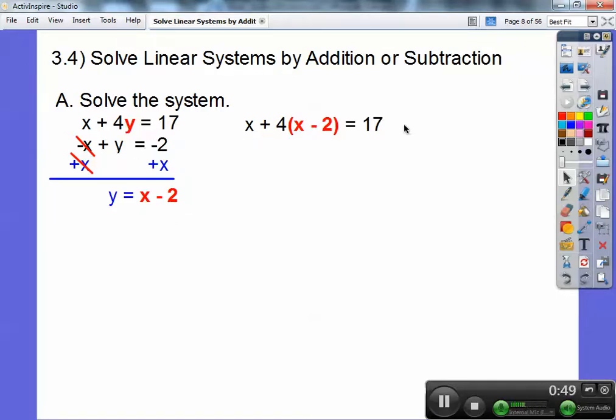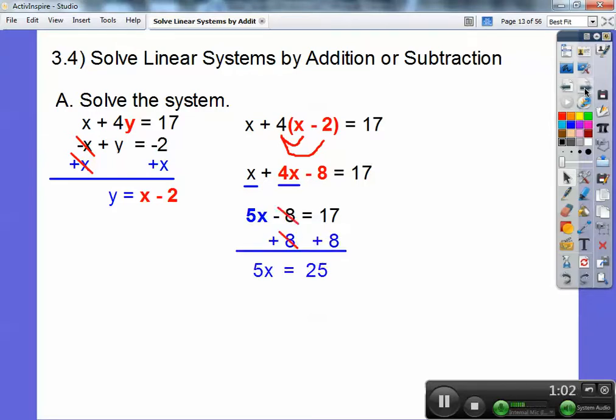Then I'm going to use the distributive property and distribute the 4 through. So 4x minus 8. Then we'll combine those like x's right there. So x plus 4x is 5x. And then 5x minus 8. Then we'll add 8 to both sides. And we get 25. 5 goes into 25 five times.